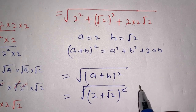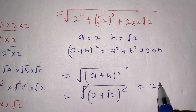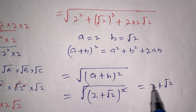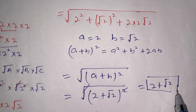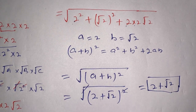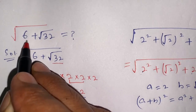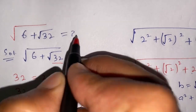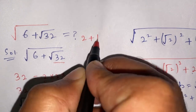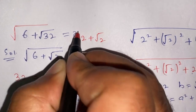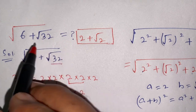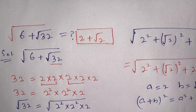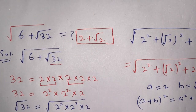Taking the values of a and b we get 2 plus square root of 2, whole squared. This square and the root cancel out, giving us 2 plus square root of 2. Thus square root of 6 plus square root of 32 equals 2 plus square root of 2. This is our final answer. Make sure you subscribe to our channel for more informative videos. See you in the next video, till then bye!